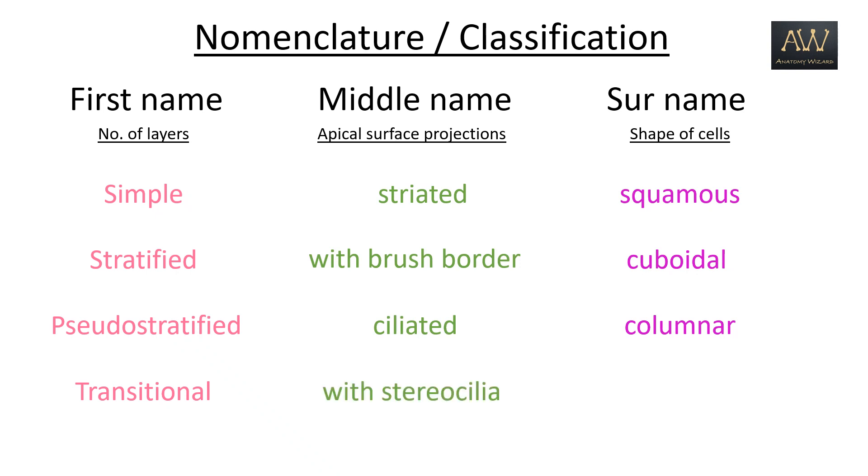Lastly, some epithelial tissues may be identified by the presence or absence of keratin on the surface and are hence termed as keratinized or non-keratinized. So we can see that the nomenclature of epithelial tissues is actually a structural one rather than a functional.